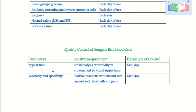Quality control of reagent red blood cells: for appearance, there should be no hemolysis or turbidity in the supernatant by visual inspection, and this should be done each day. For the reactivity and specificity test, there should be a positive reaction with known sera against red blood cell antigens, and this should also be done each day.